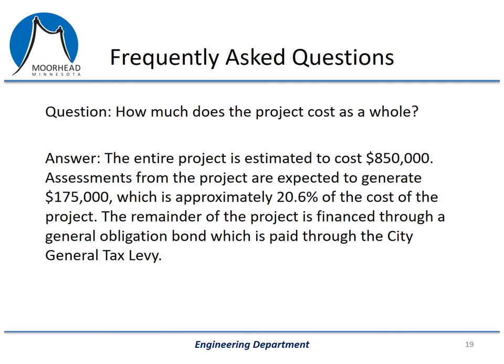How much will this project cost as a whole? The entire project is estimated to cost approximately $850,000. Assessments from this project are expected to generate $175,000, which is approximately 20.6% of the cost of the project — that's the homeowner's share through assessments. The remainder of the project is financed through a general obligation bond, which is paid through the city general tax levy. It's important to note that when we bond for these projects, we have to assess a minimum 20% of the project to homeowners, and right now we're right at approximately 20.6%.